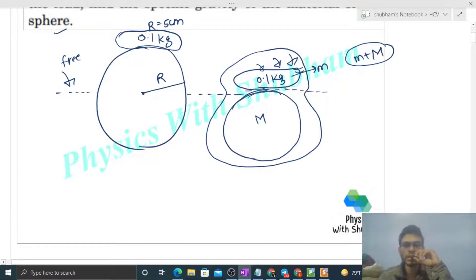So this system will float in water. It means net force on this system should be zero. This system's weight is small m plus capital M into G vertically downward direction. That will be balanced by the buoyancy force. Buoyancy force will be the volume immersed in water, that is the volume of the solid sphere: 4 by 3 pi R cube into density of water into G.